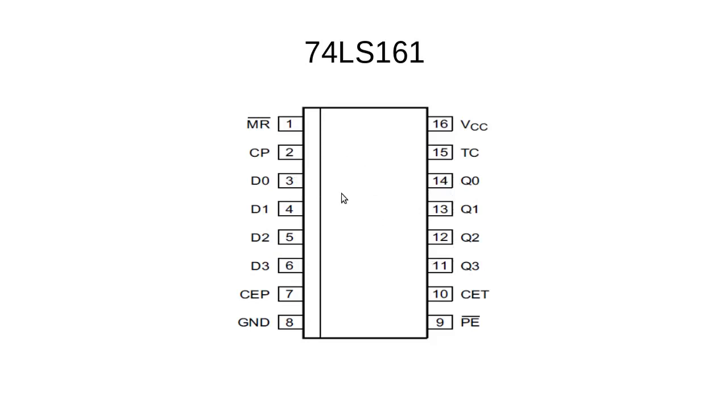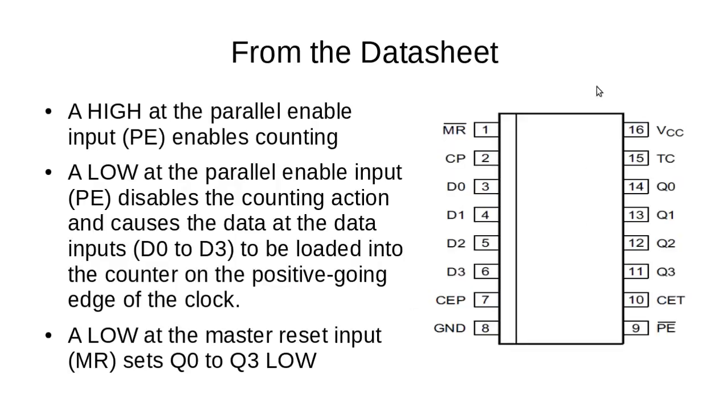We've got a couple of extra control lines: MR, TC, CEP and CET. Let's look at how we can use those to build a counter. From the datasheet we know that if we drive PE low it will load the inputs into the register. What we don't know is that if we leave PE high then the chip actually acts as a counter.